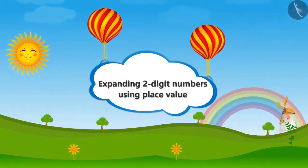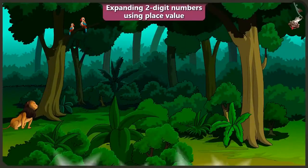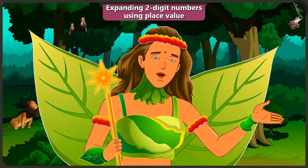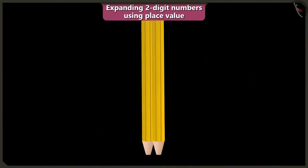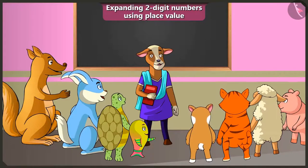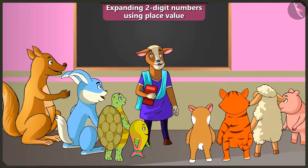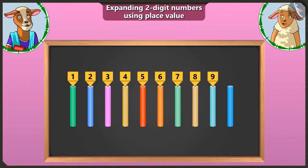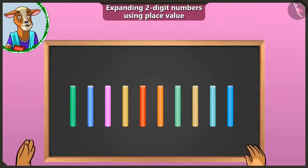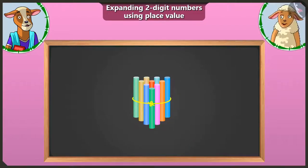Adding two-digit numbers using place value. Friends, today in this video we will learn expanding two-digit numbers using place value and writing in boxes of tens and ones. In the last video, you have learned to make bundles of tens. So now, Lily, make a bundle of ten and show us. I will tie these one, two, three, four, five, six, seven, eight, nine, and ten chalks like this. It has become a bundle of ten.